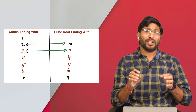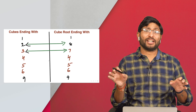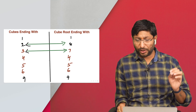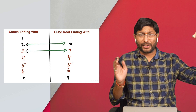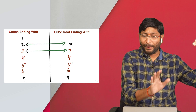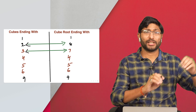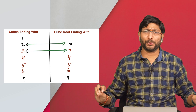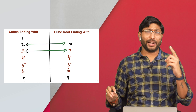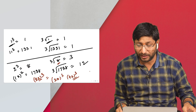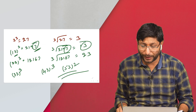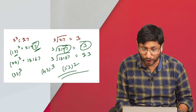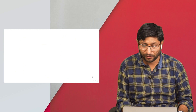This table is very important to remember — without it you can't find cube roots. If you learn 1³ to 20³ and remember this single table, you can solve any cube root in one step. Let me explain a few problems to make you understand.